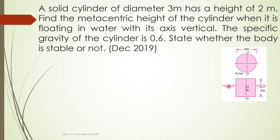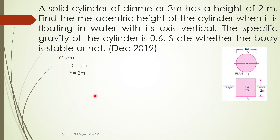This is the elevation of the body, this is the water level, and if you look from the top you can see the circle — that view is the plan, so diameter is 3 meters. The cylinder is floating in water with a specific gravity of 0.6. We have to find the metacentric height GM and state whether the body is stable or not. Given data: diameter D = 3 m, height H = 2 m, specific gravity = 0.6.